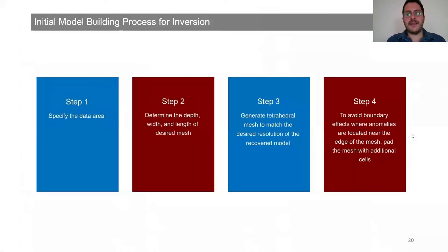There are a number of steps that are required before running the inversions. We need to specify the data area which our interest will be taking part in. Then we need to determine the depth, width and length of the desired mesh for the model. We need to generate TDRL meshes to reach the desired resolution of the recovered model. Finally, in order to avoid boundary effects where we actually have anomalies, we need to pad the mesh with additional cells.